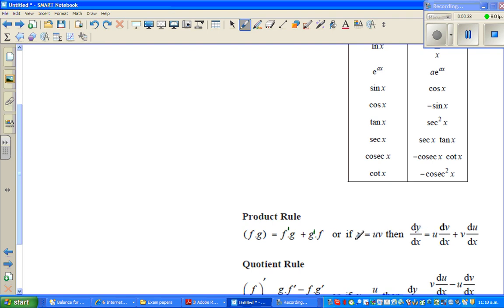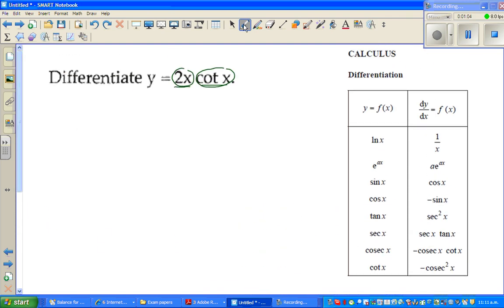That is same as if y is equal to u times v, then dy by dx is u times dv by dx, that is differentiate the second, plus you write the second and differentiate the first. So you can do this in any order. So you can differentiate the first, leave the second as it is, differentiate the second and leave the first as it is. So I'm going to use the chain rule.